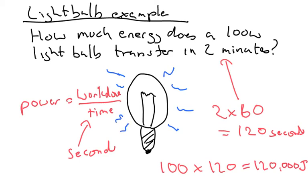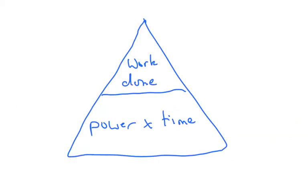Okay, here's the triangle. If you want to work out the power, you do work done divided by time. If you want to work out how much work was done, you do power multiplied by time. Maybe you want to find out how long a certain event took—well, that would be work done divided by the power.